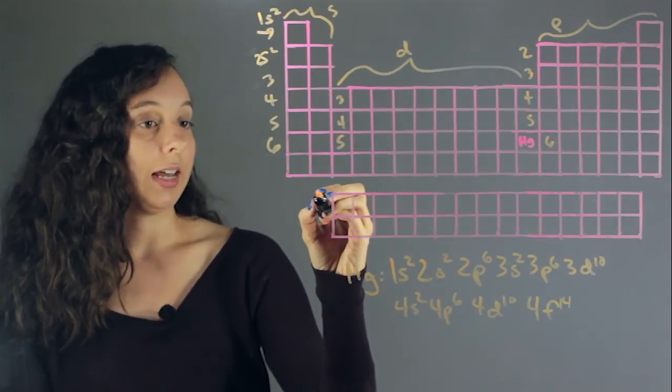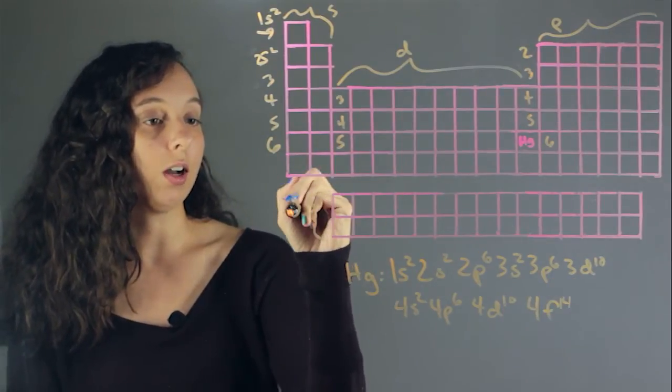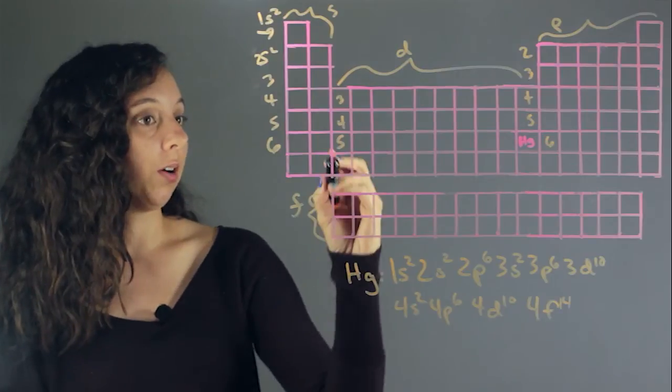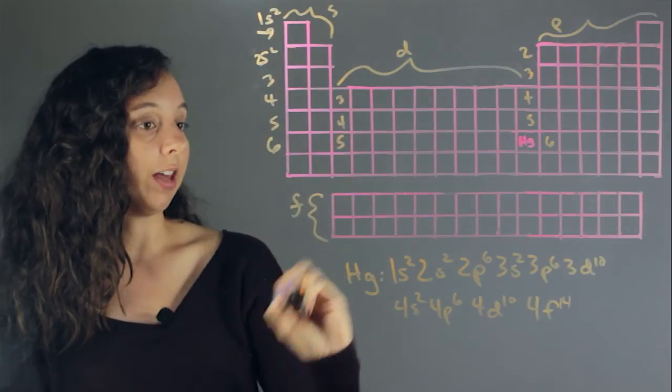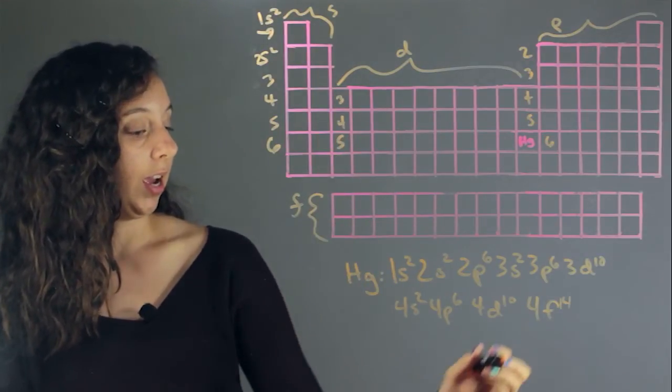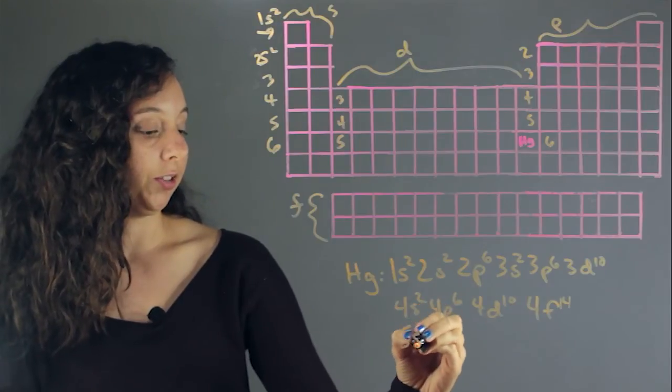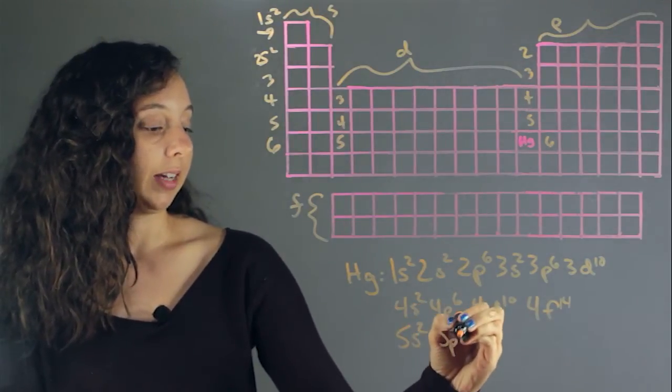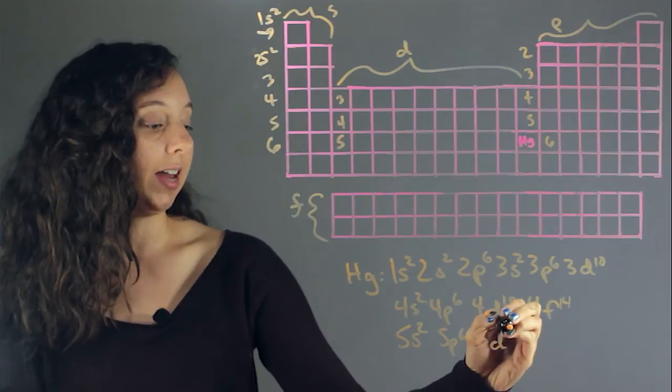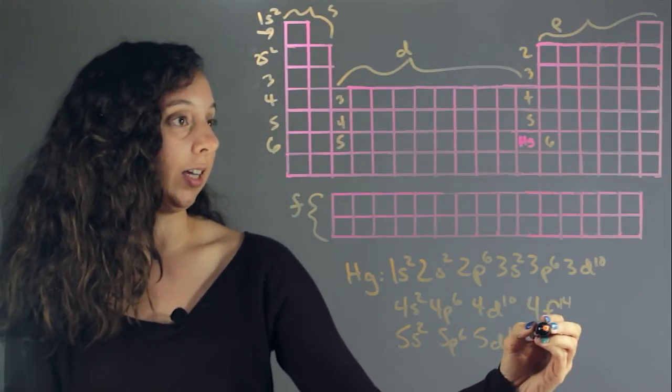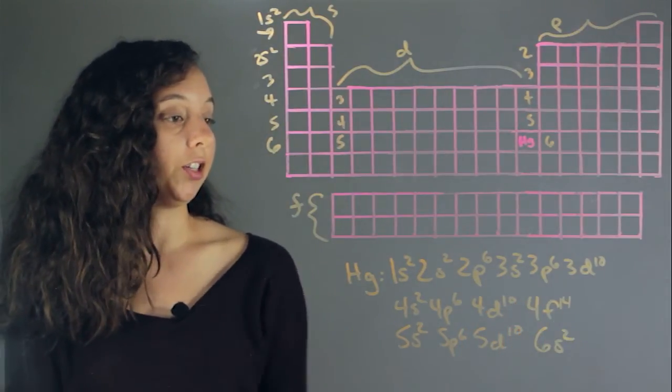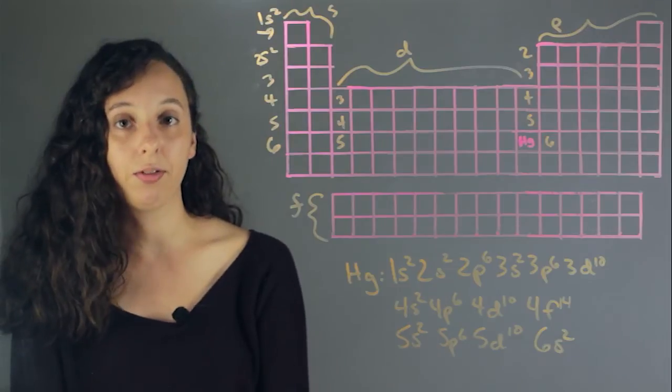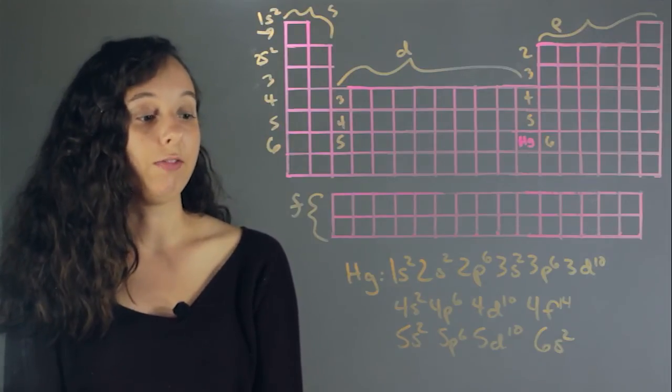So this is actually the f block. And so we've gotten all the way down to here now where the f block starts happening. And then we're going to have 5s2, 5p6, 5d10, and finally 6s2. All right, so that's a mouthful. But this is the electron configuration of mercury.